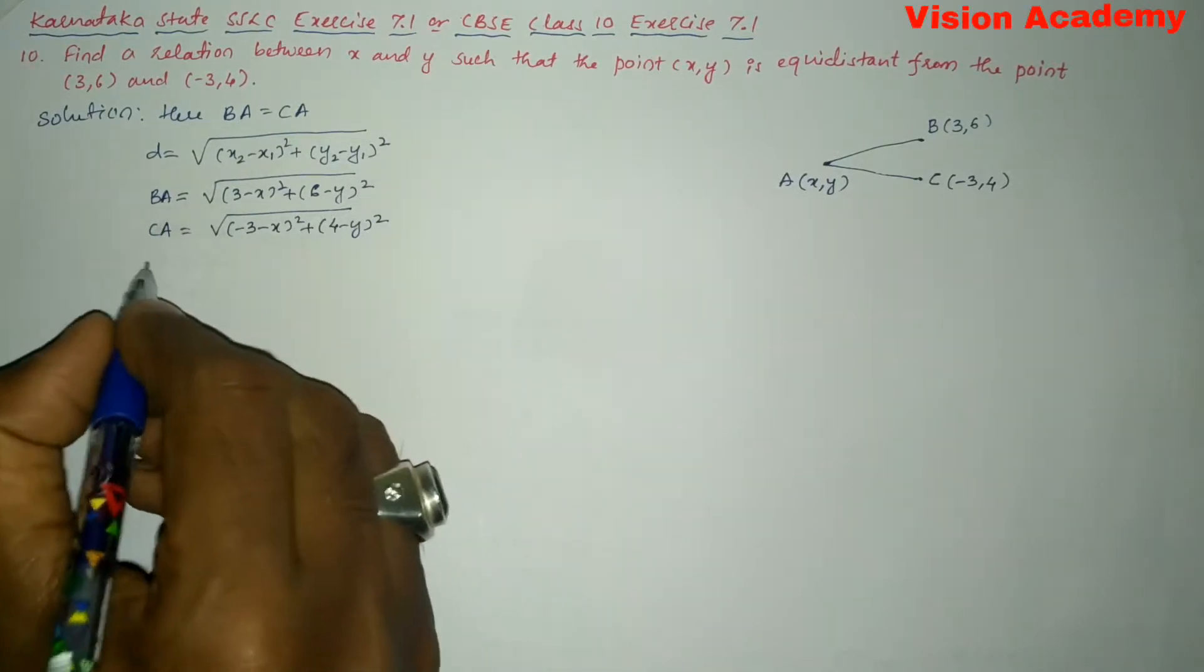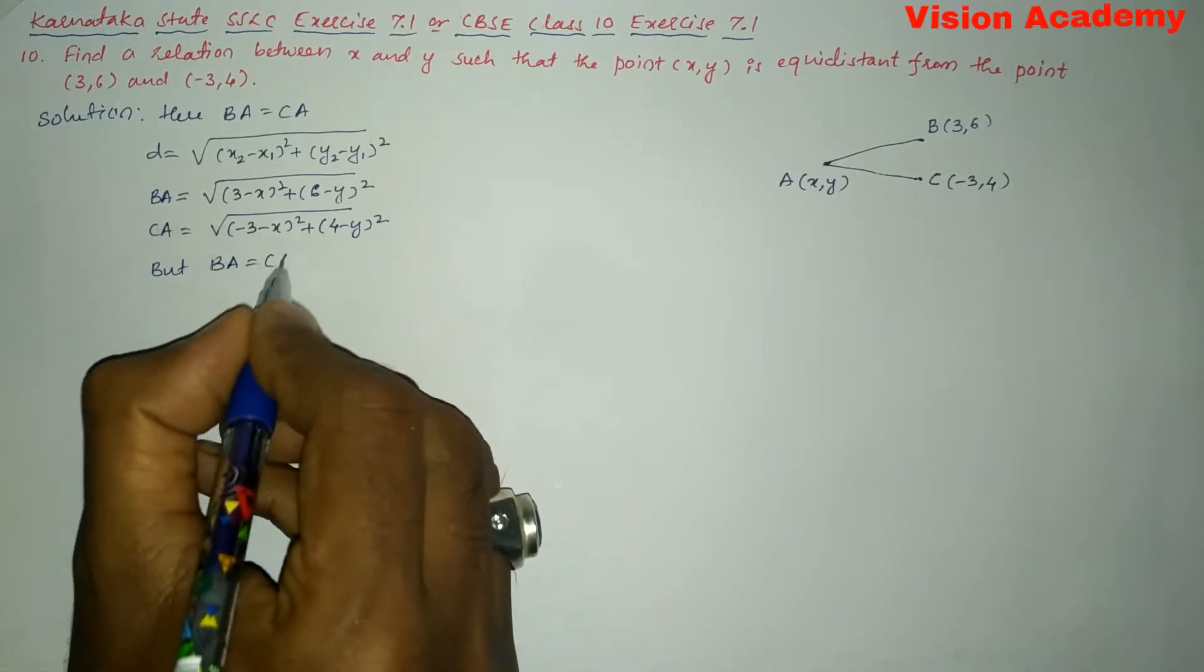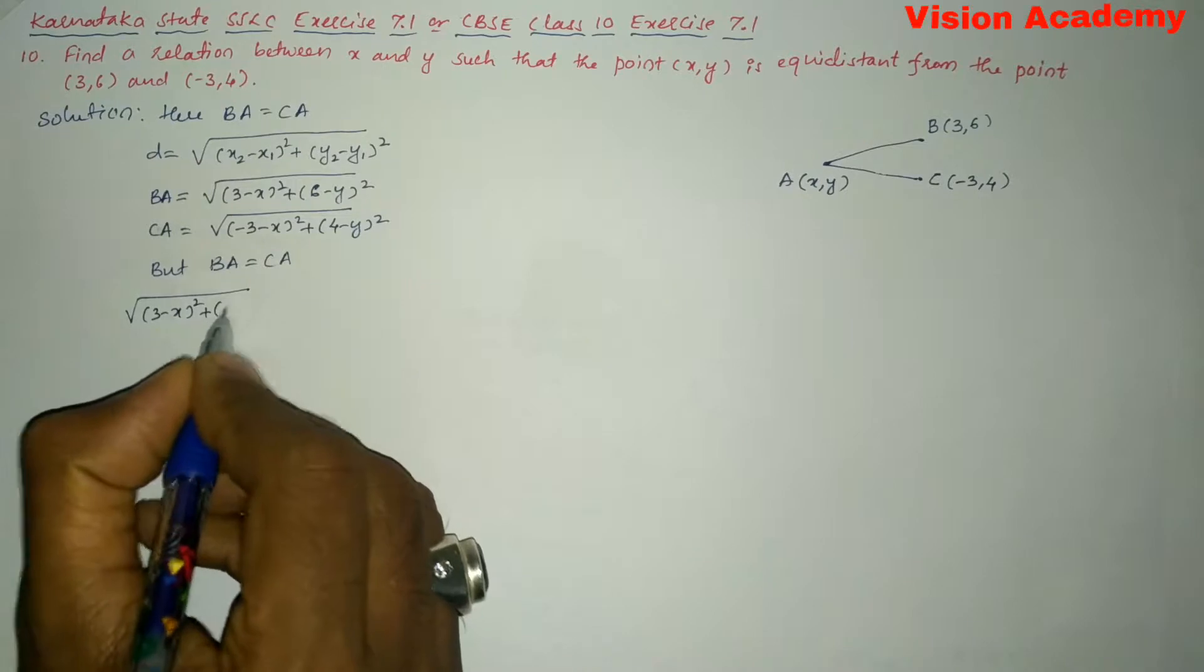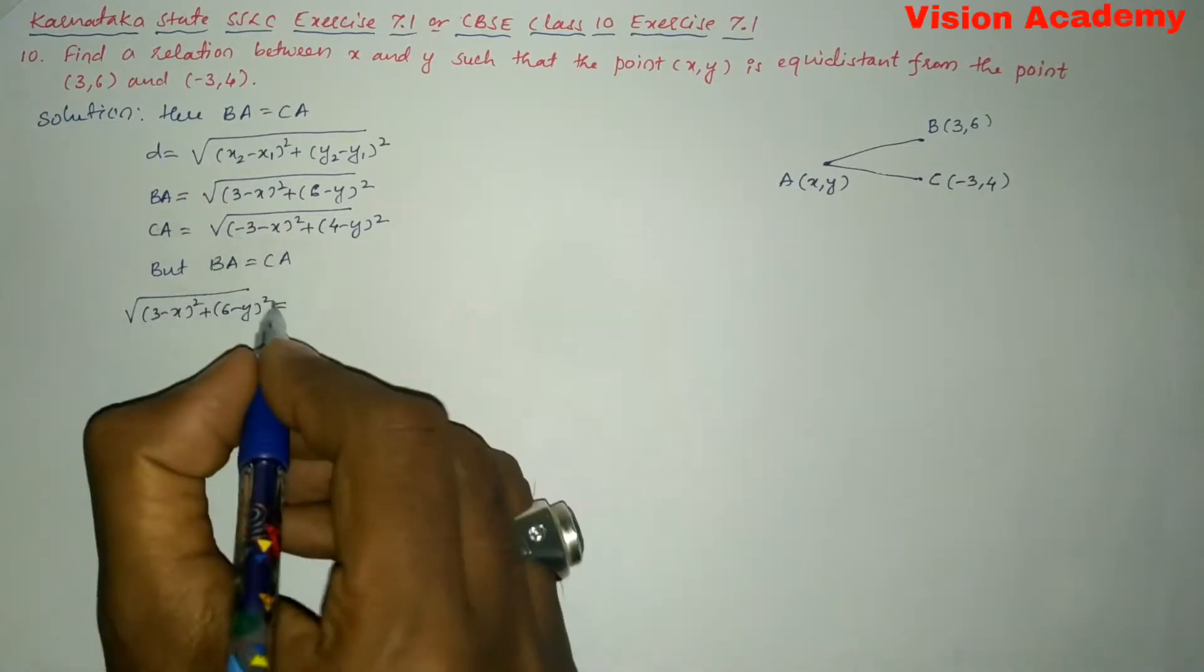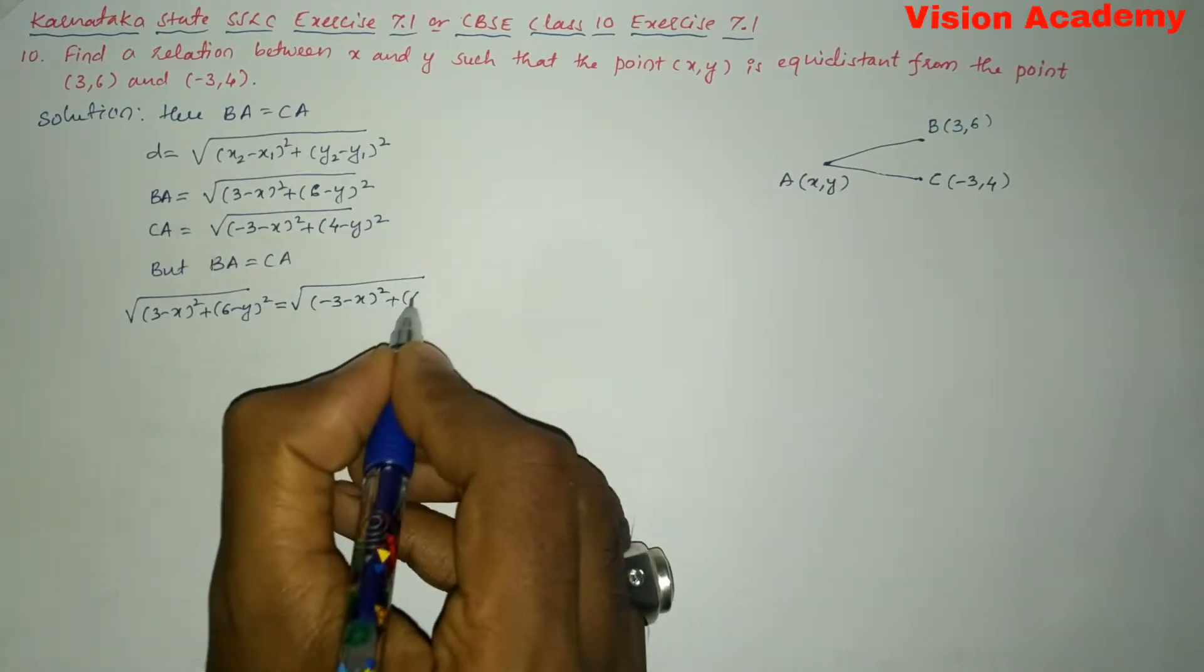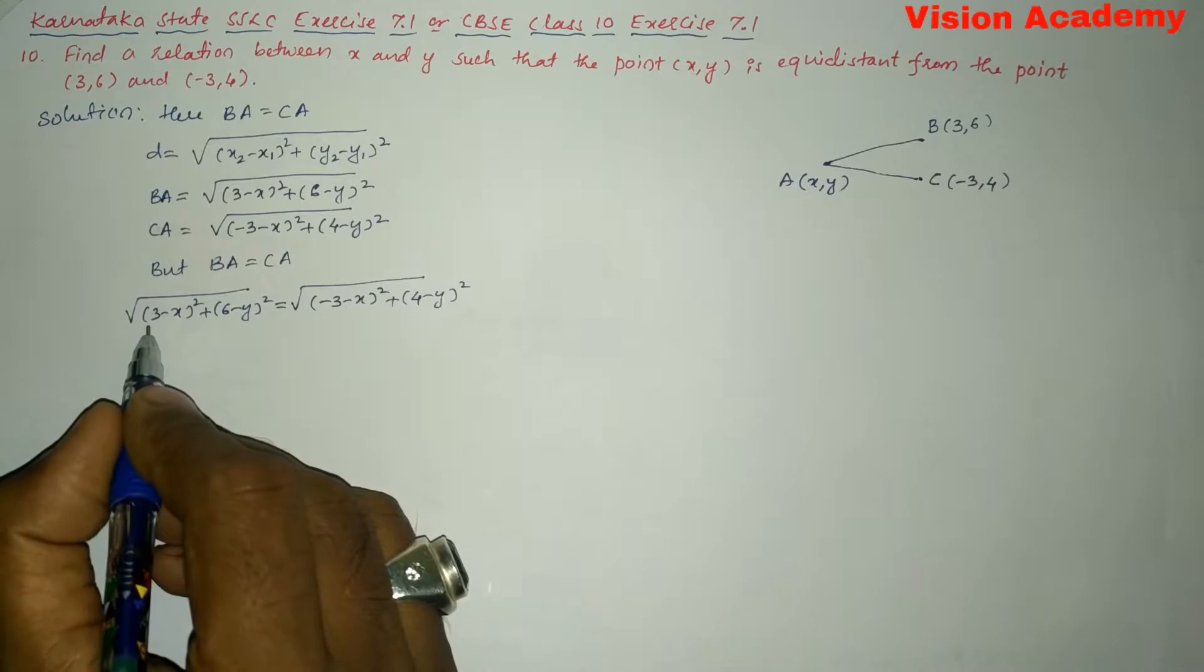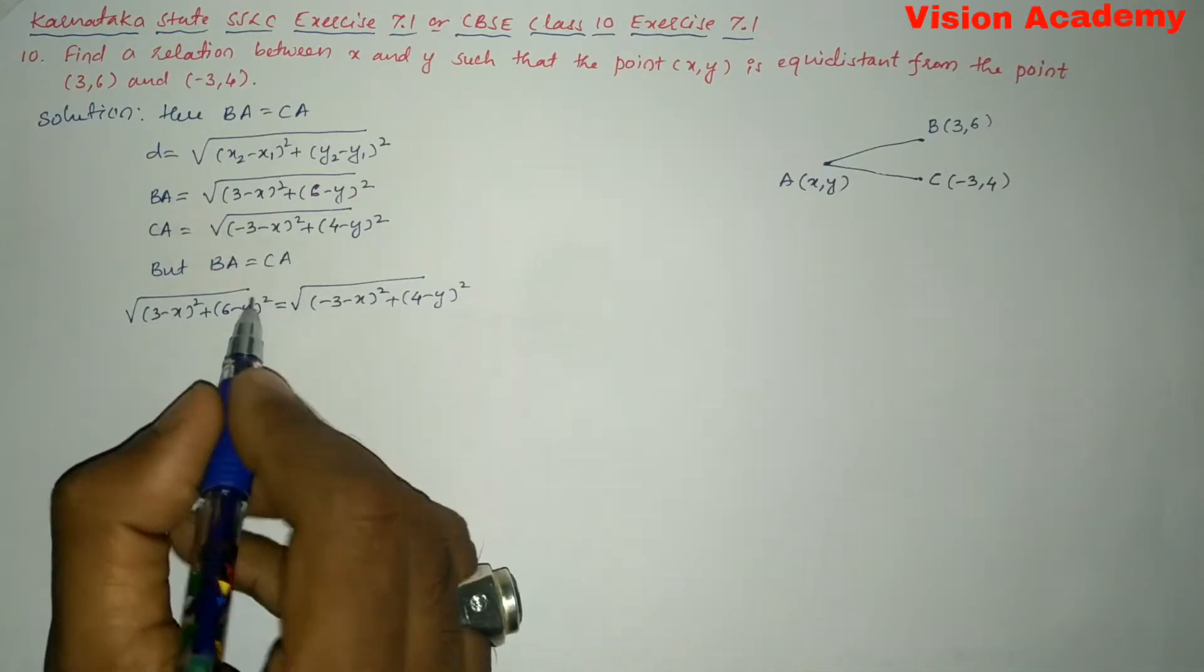Now, but BA is equal to CA. So, BA = √[(3 - X)² + (6 - Y)²] = CA = √[(-3 - X)² + (4 - Y)²]. Here this square root will get cancelled and we have got (3 - X)² + (6 - Y)² = (-3 - X)² + (4 - Y)².